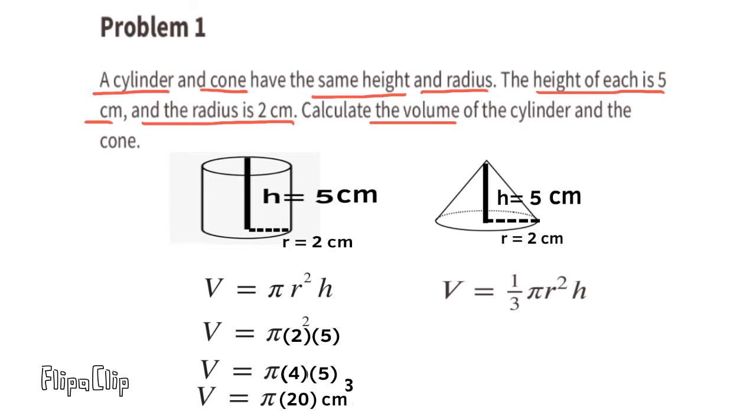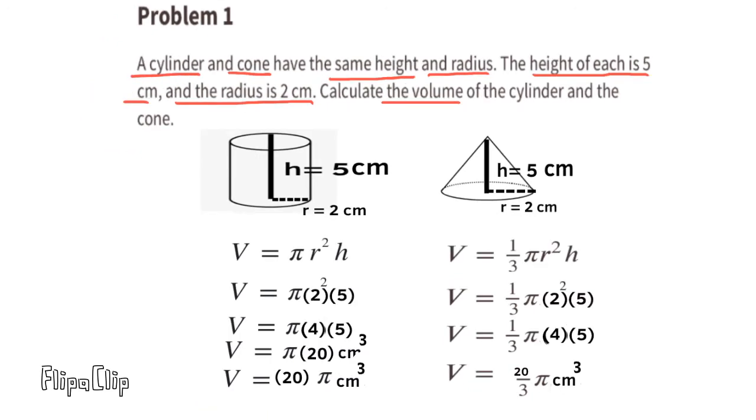To find the volume of the cone, we'll multiply 1 third times pi times r squared times height. Since the radius is 2 and the height is 5, we'll multiply 1 third times pi times 2 squared times 5. And that's 1 third times pi times 4 times 5, or 1 third times pi times 20. That can also be written as 20 over 3 times pi centimeters cubed.